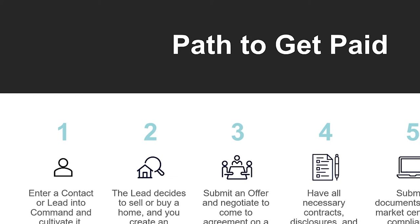The path to get paid is very simple. We're going to learn how to enter a contact into Command, how to put it into an opportunity. We're then going to submit an offer, and once we have all the necessary contracts we're going to put them into Command into the opportunity either through DocuSign, through ZipForms, or separately. We're going to submit these documents to the Market Center, correct them, and then submit a commission request from Command.